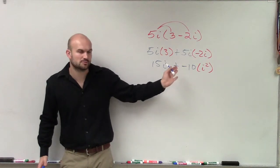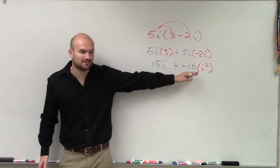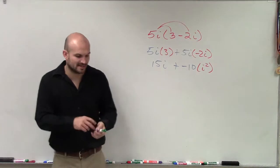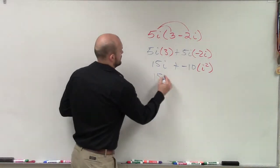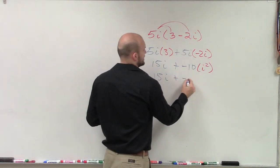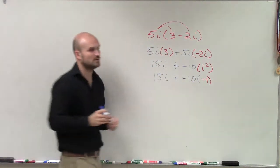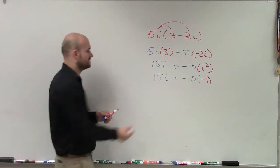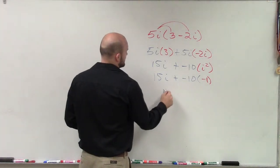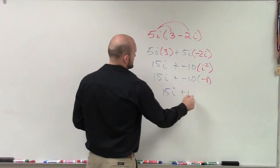But, before I do that, i squared we know is represented to negative 1. 15i plus a negative 10 times negative 1. Well, negative 1 times negative 10 is going to be a positive. So, therefore, I have 15i plus 10.